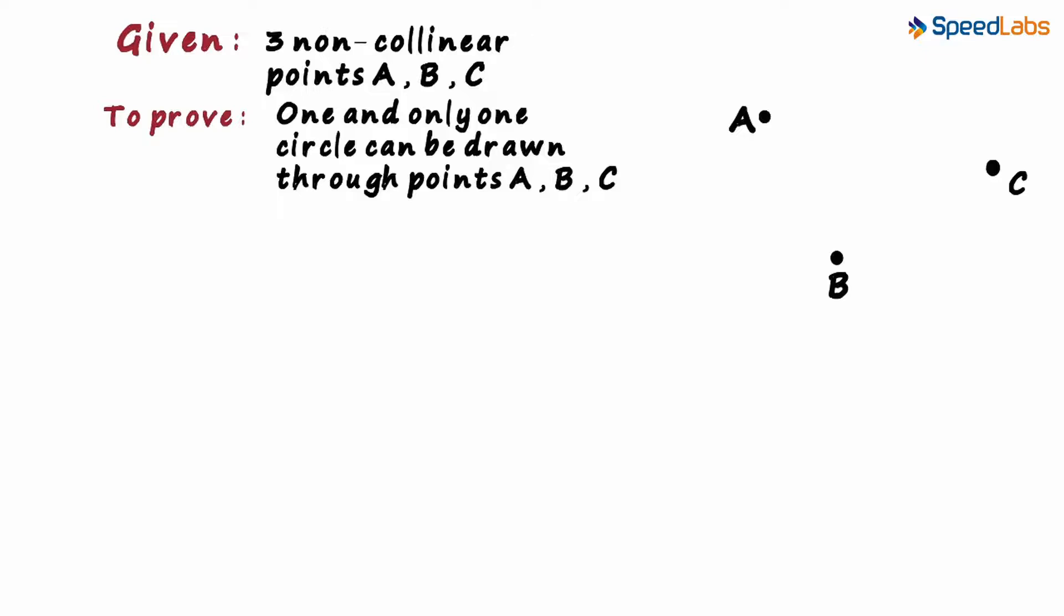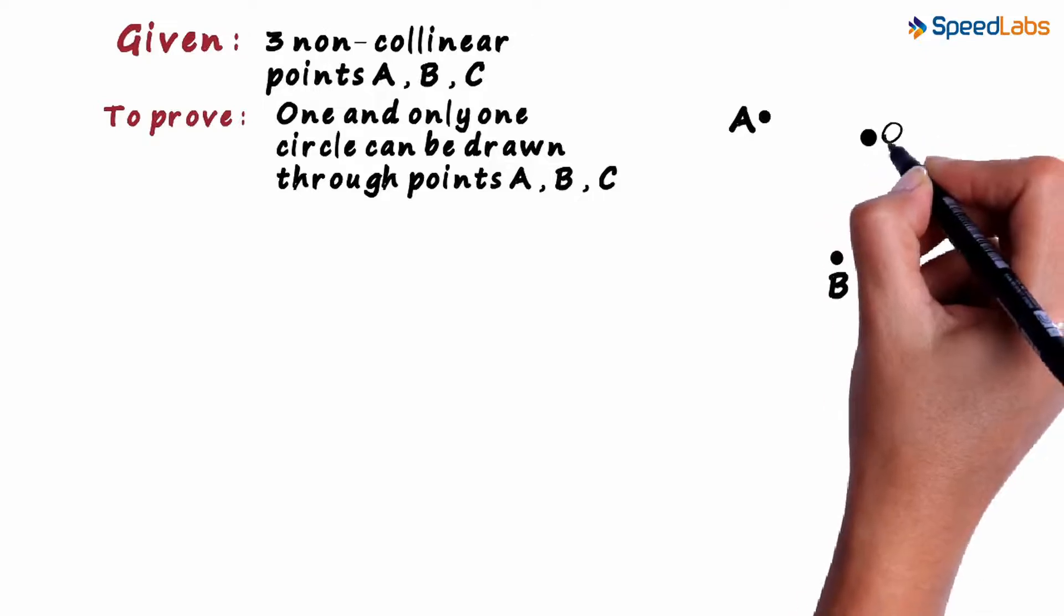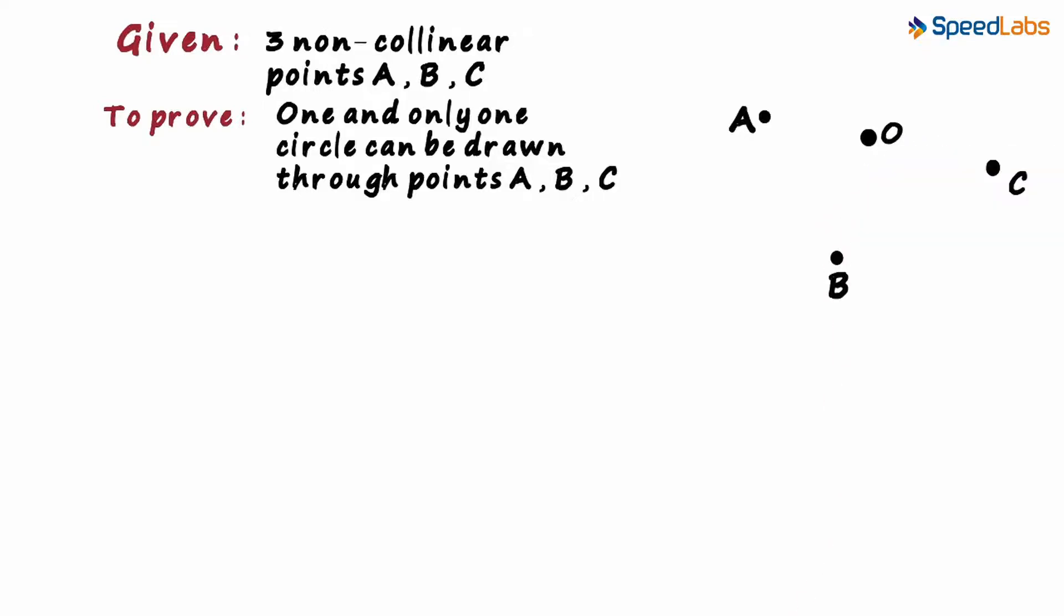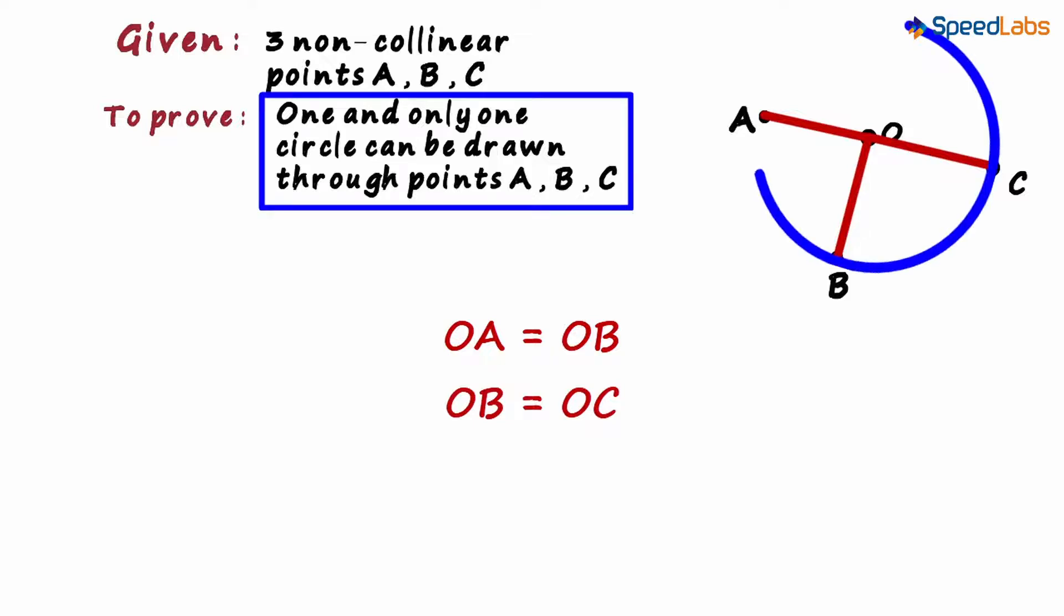Let's assume we have a point O somewhere on the same plane as these three points. If we successfully prove that OA will be equal to OB which will be equal to OC, then we will be able to say that one circle passes through points A, B and C.